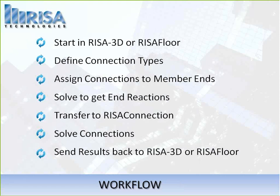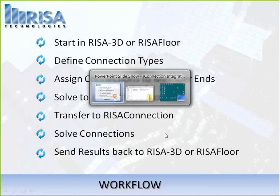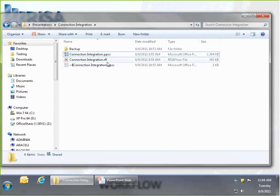The big new feature in RISA Connection 1.1 is the integration. The workflow is that you start in your RISA 3D or RISA Floor model, define connection types using connection design rules, assign connections to member ends, solve your model to get end reactions, and transfer those end reactions to RISA Connection. Once in RISA Connection, you correct things and solve, then send all connection results back to RISA 3D or RISA Floor.